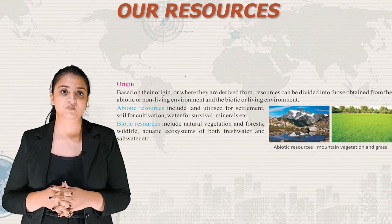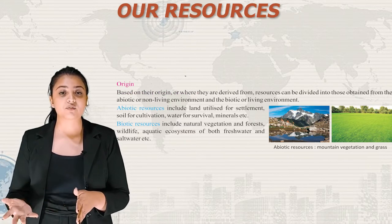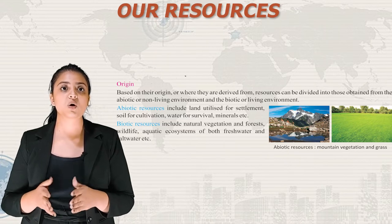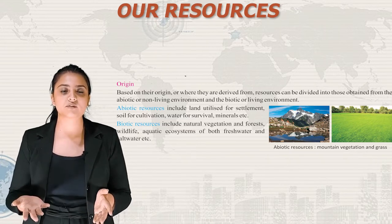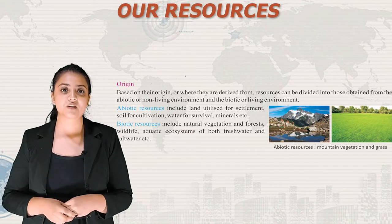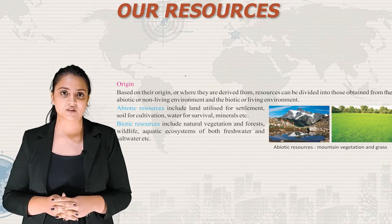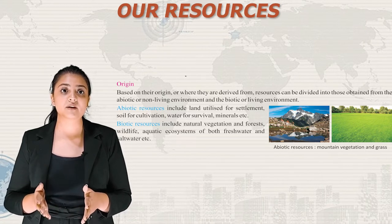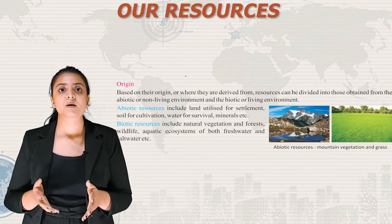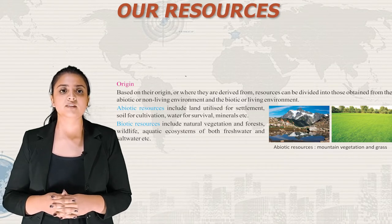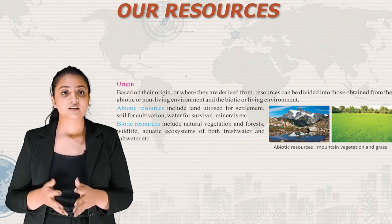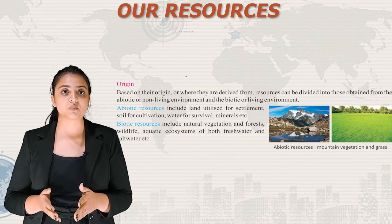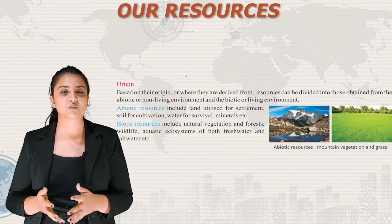First is origin. Based on their origin, resources can be divided into those obtained from the abiotic or non-living environment and the biotic or living environment. Abiotic resources include land utilized for settlement, soil for cultivation, water for survival, minerals, etc. Biotic resources include natural vegetation, forests, wildlife, and the aquatic ecosystem of both freshwater and saltwater.